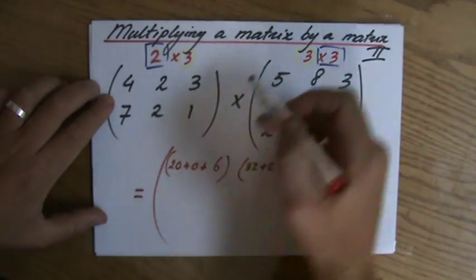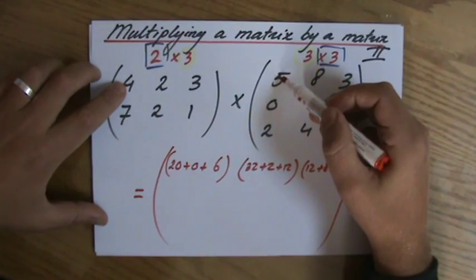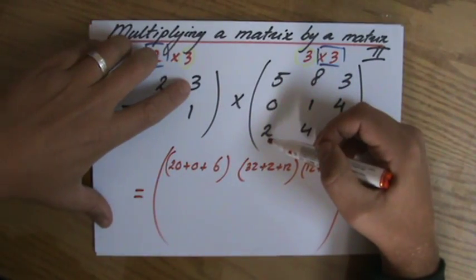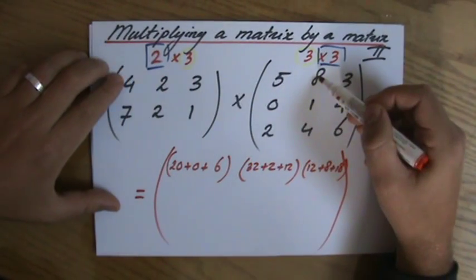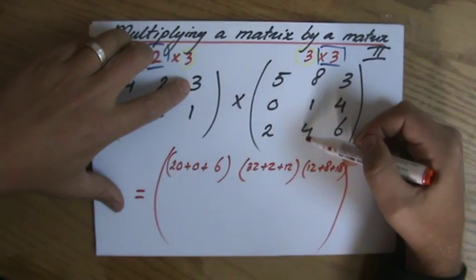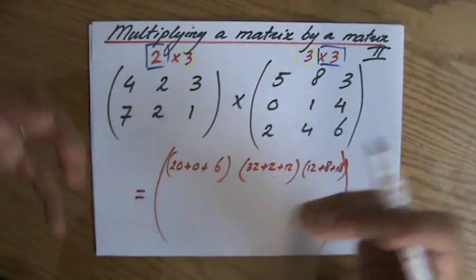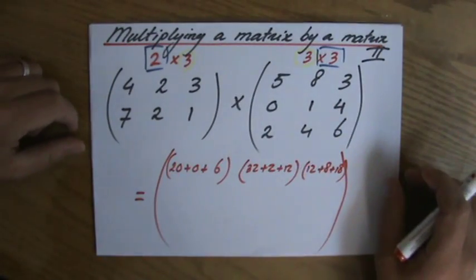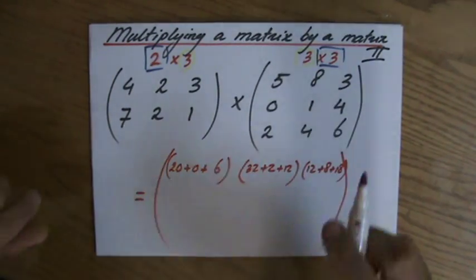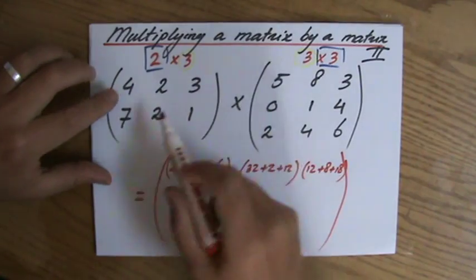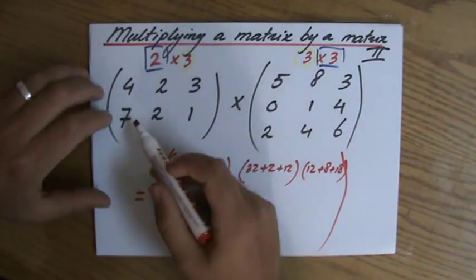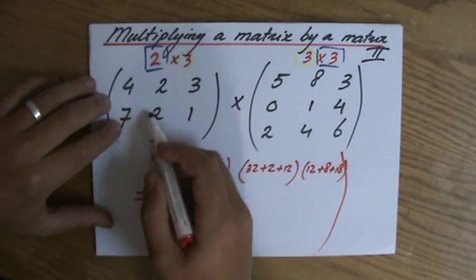Horizontally, vertically. So again, 4×5 plus 2×0 plus 3×2, finished. 4×8 plus 2×1 plus 3×4, finished. And please see how I use my fingers as well. Now, I'm 34 years old and I still use my fingers for this. That's fine, nothing wrong with that. We continue now because I've done these. Now I drop a row and I do the same thing, but now with 7, 2, and 1.